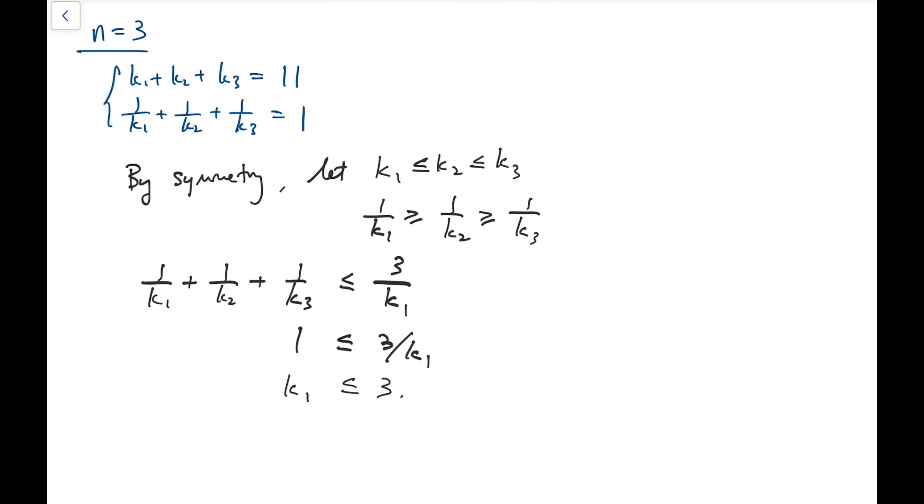When we add them up, we have 3 over k1. So that means 1 is less than or equal to 3 over k1. And so k1 is at most 3. Then we can reduce the number of cases to finite ones, because for k1 is less than or equal to 3, then we can say that k1 is either 1, 2, or 3. Of course, there is no solution when k1 equals 1, because then the sum of the other two fractions would be 0. So we quickly dismiss this case.